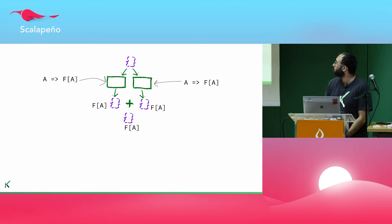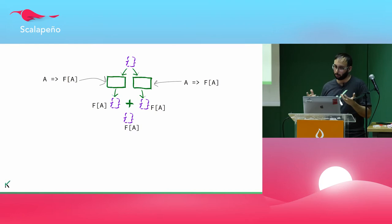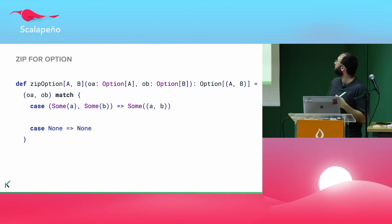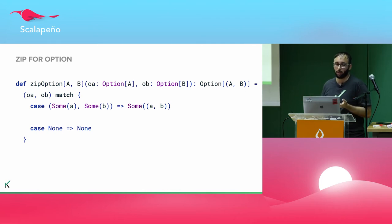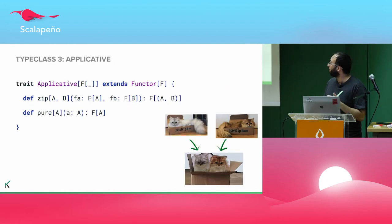We saw how to combine those A's, but that's not what our tasks produce — they produce A's inside F's. We know nothing about those F's. If we had a zip function that enables us to combine two effects, for example two options or two futures, the implementation for options would pattern match over the two options: if they both contain a value we return a new option with a tuple containing those two values, and if either is empty we return None. The type class that has this concept of combining values inside a container or effect is called Applicative.